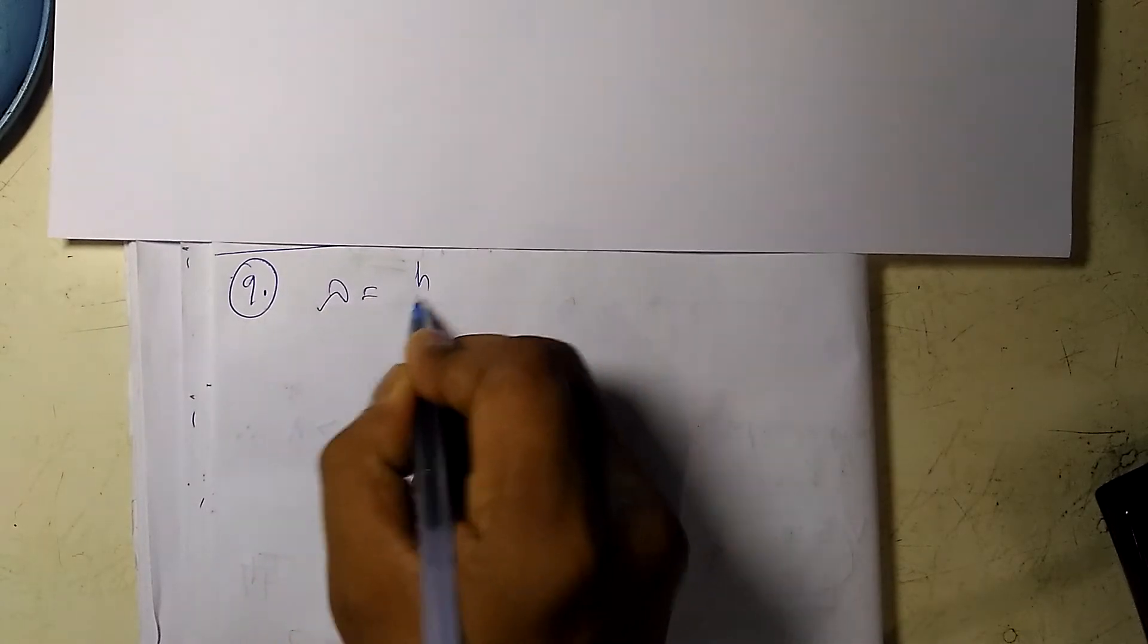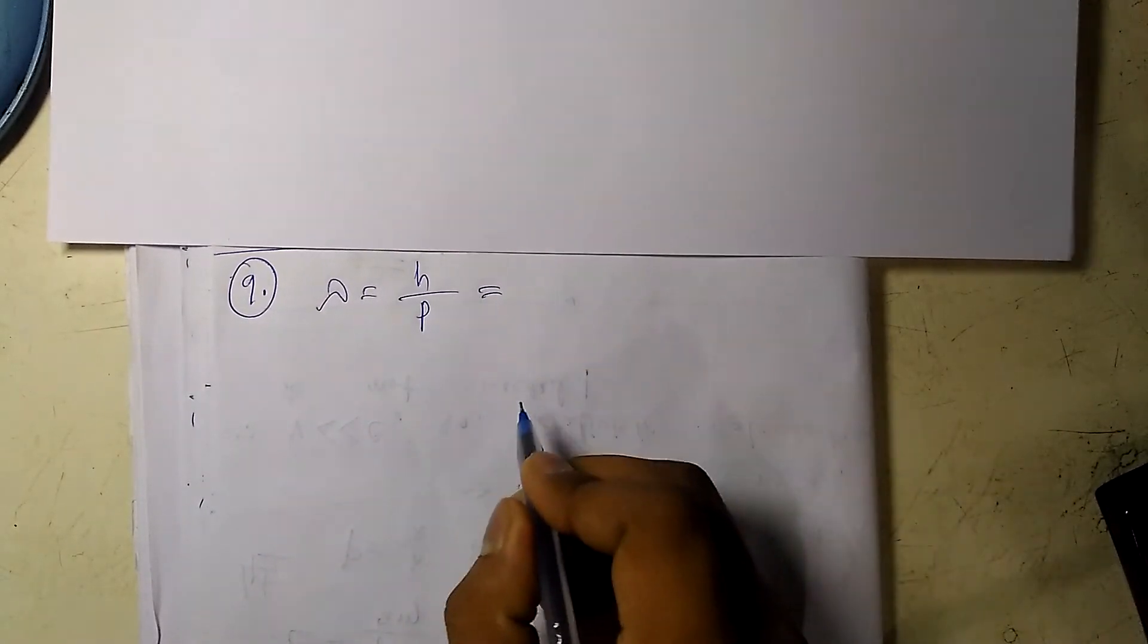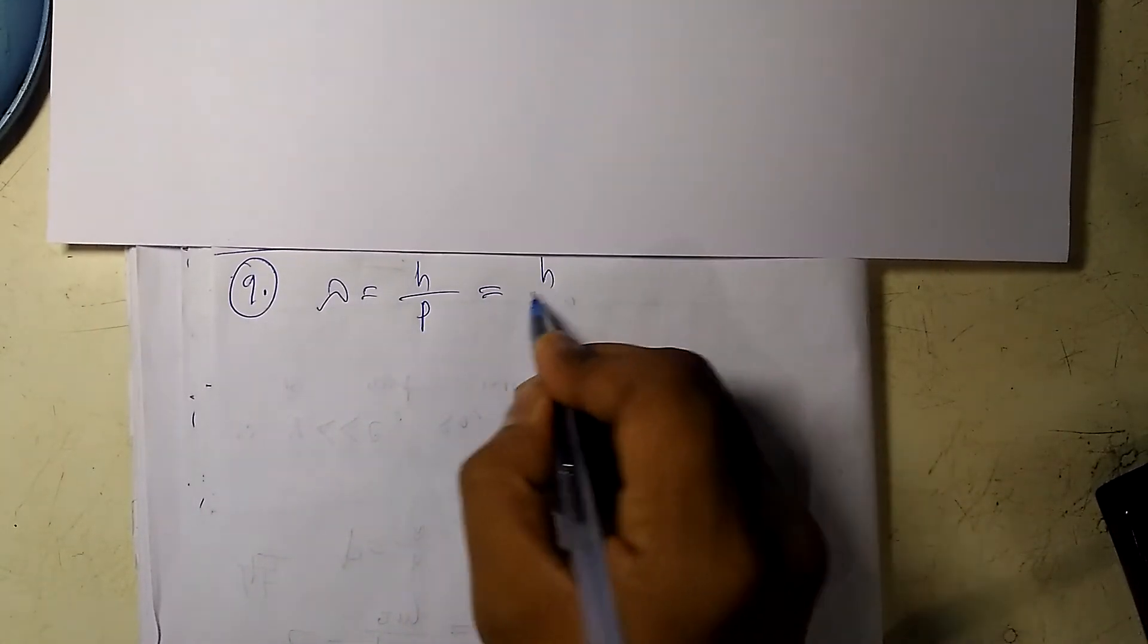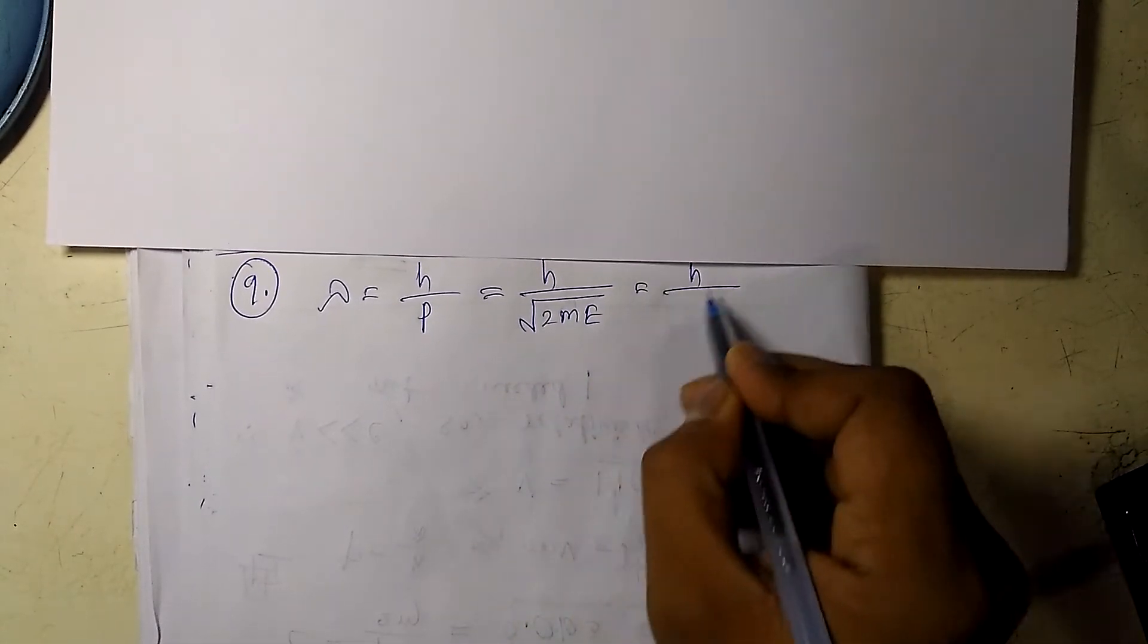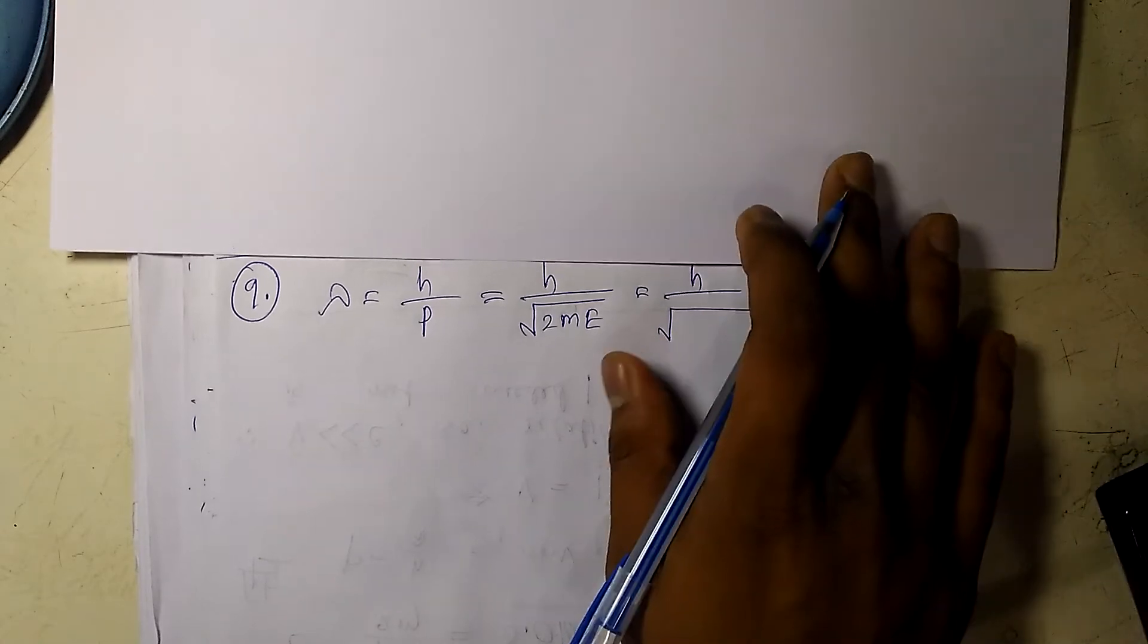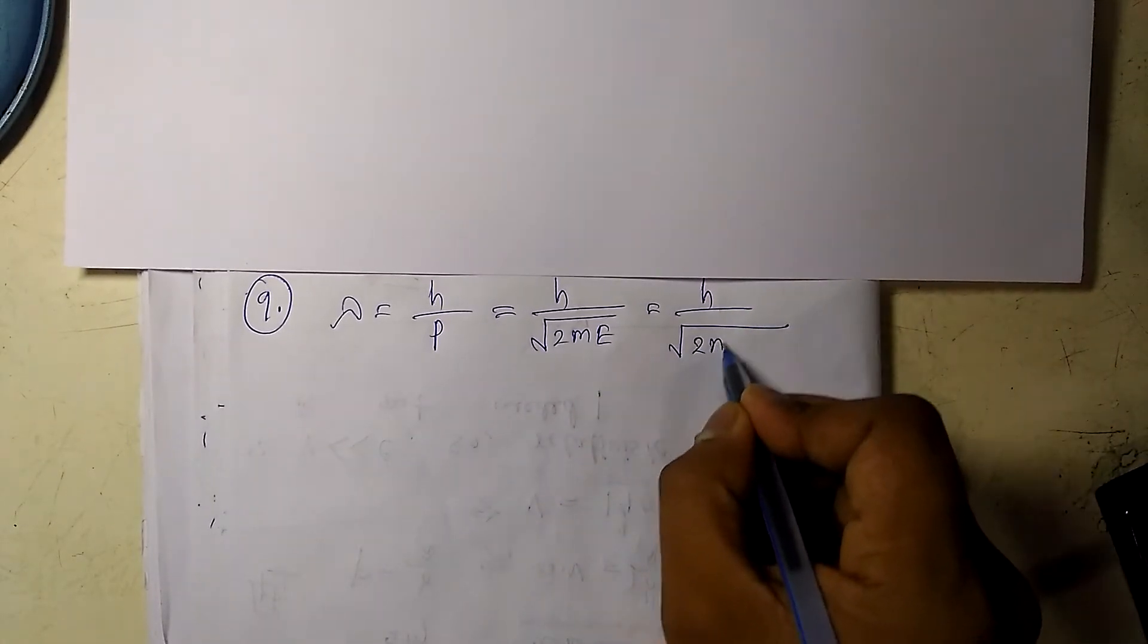So we know the formula lambda equals h by p, which is de Broglie hypothesis, and p is nothing but root of 2mE. In electron volt units it would be like twice mEV.